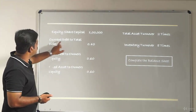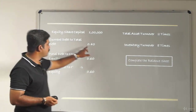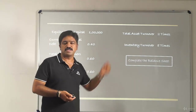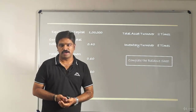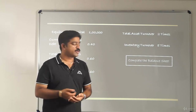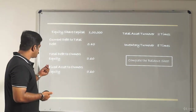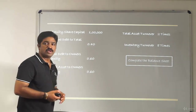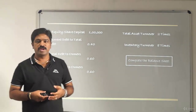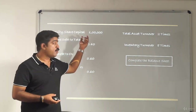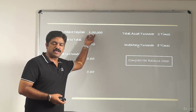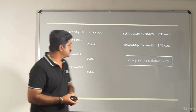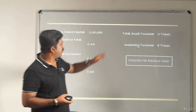Current debt to total debt is 0.40, and total debt is 60,000, so 40% of that gives us current debt. Then, fixed assets to owner's equity is 0.60, so we can again use owner's equity of 100,000 multiplied by 0.60 to find fixed assets.